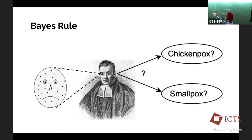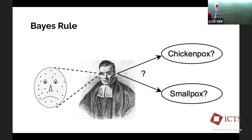Essentially, you can imagine this to be patient 1, patient 2, patient 3, patient 10, or cell line 1, cell line 2, gene 1, gene 2, person 1, person 2. And these could be variables like the examples that we were discussing.